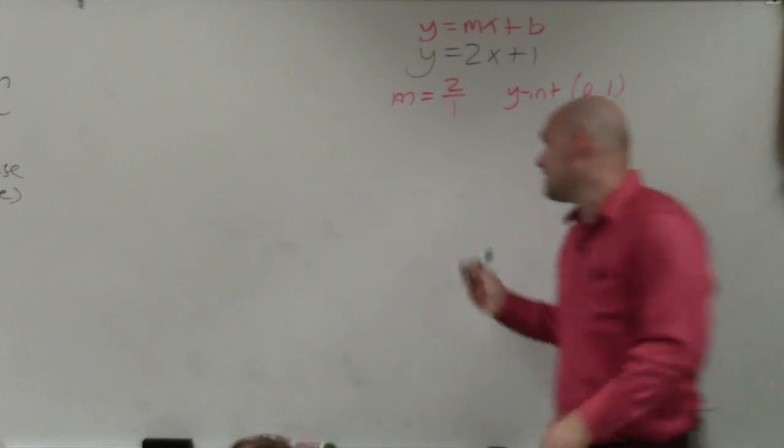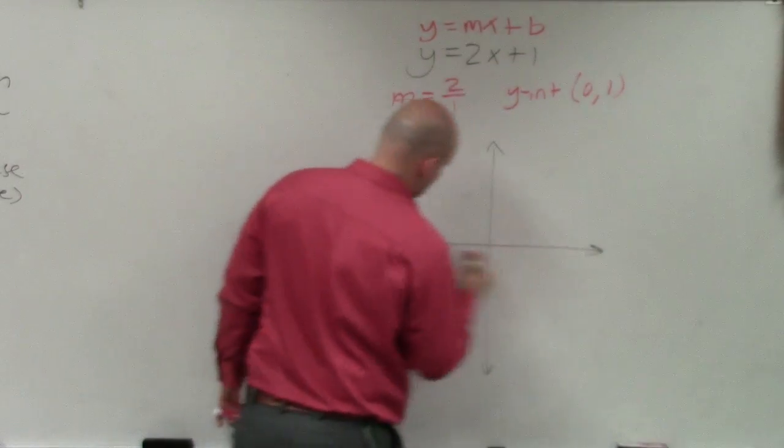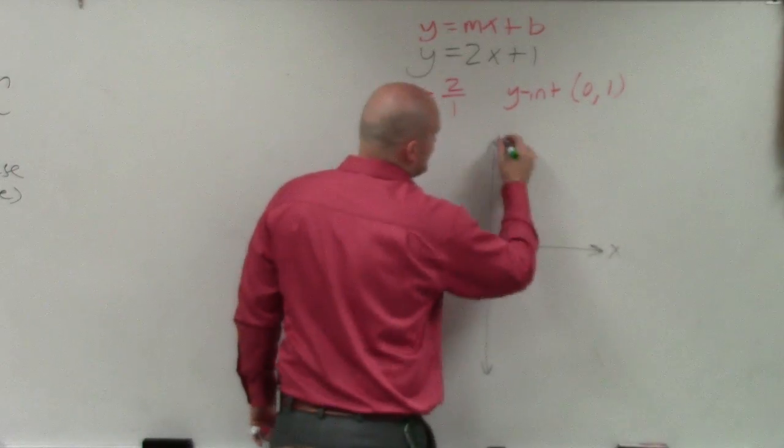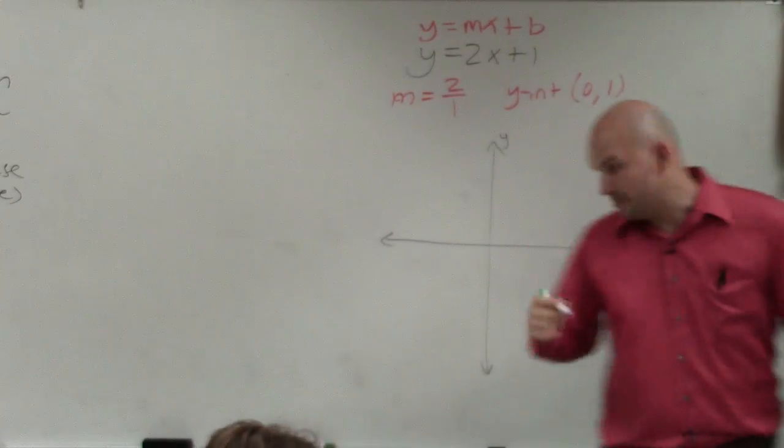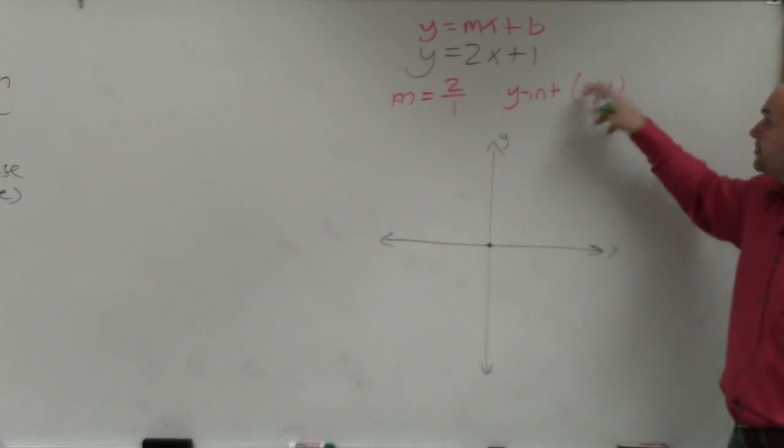Then as we're going to go ahead and graph, the first thing, first step you want to do is plot the y-intercept. So we have an x-axis and we have a y-axis. Remember where they intersect is what we call the origin, which is at 0, 0. So to plot the y-intercept, I go to 0, 1, and I plot the point.